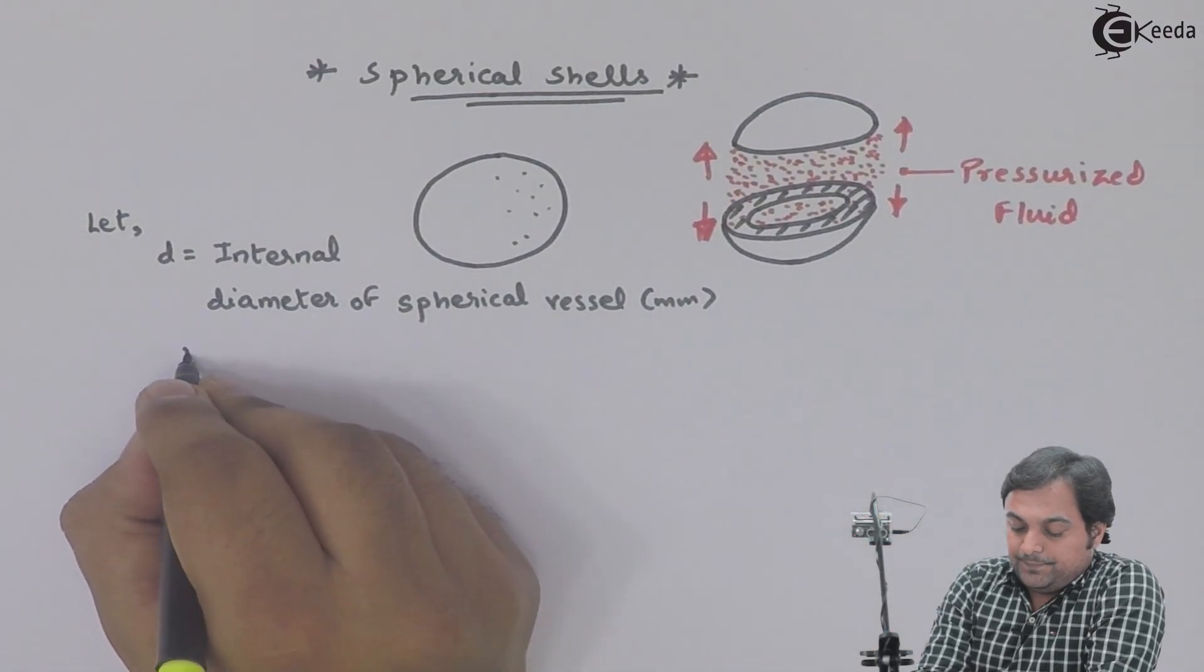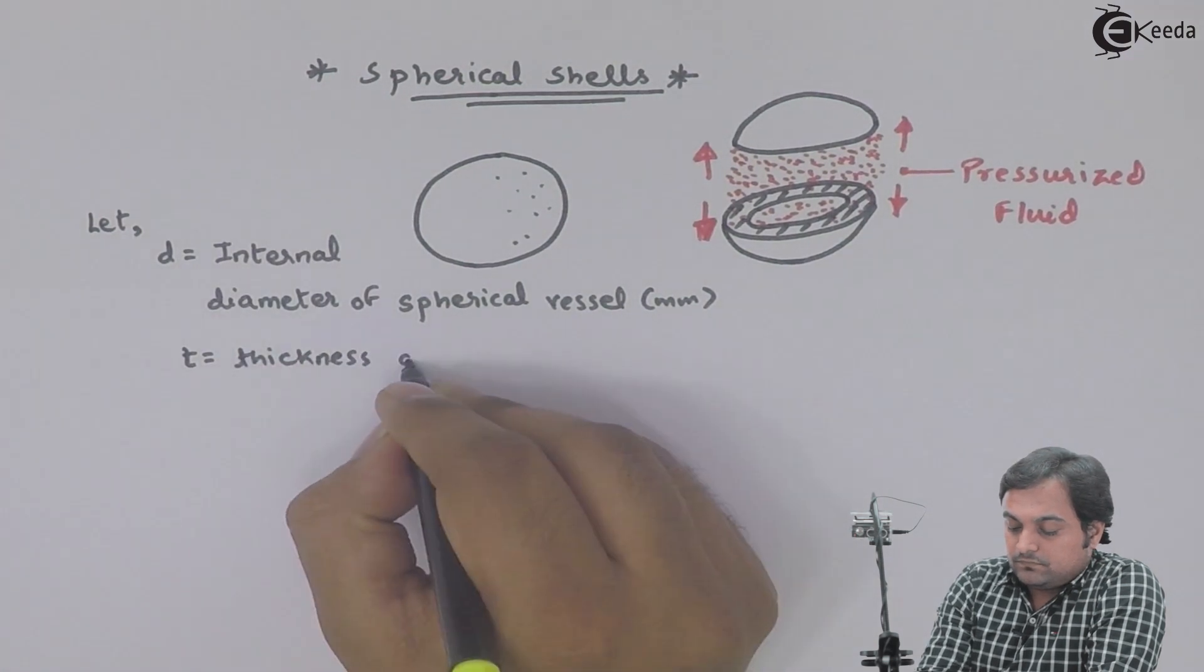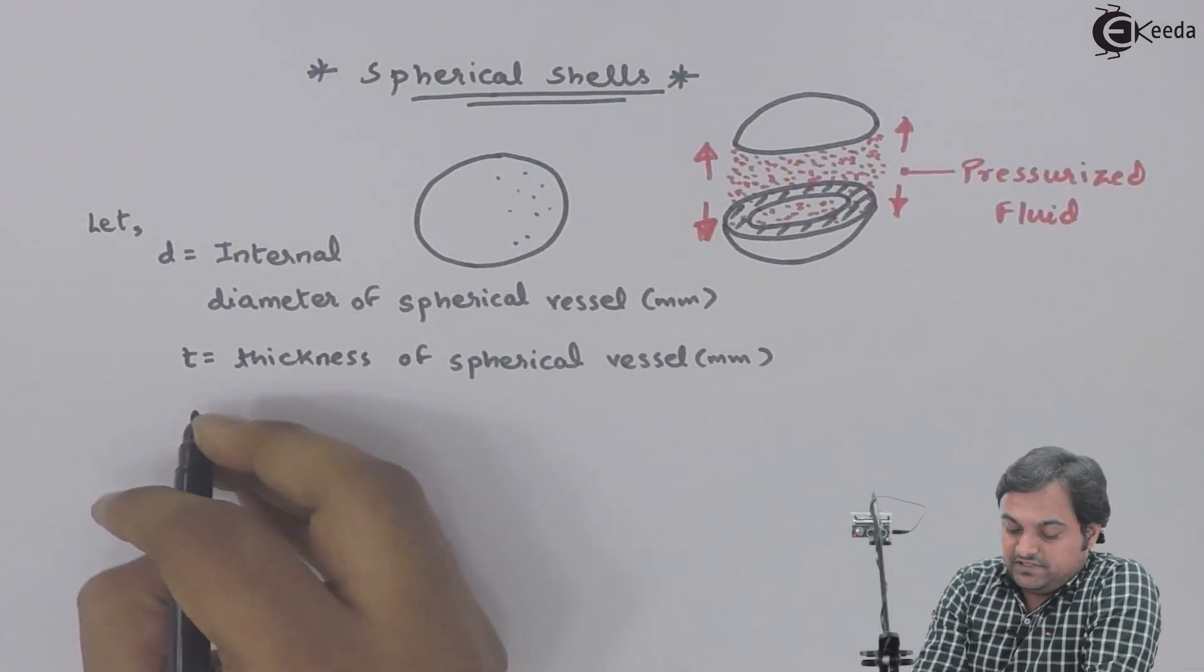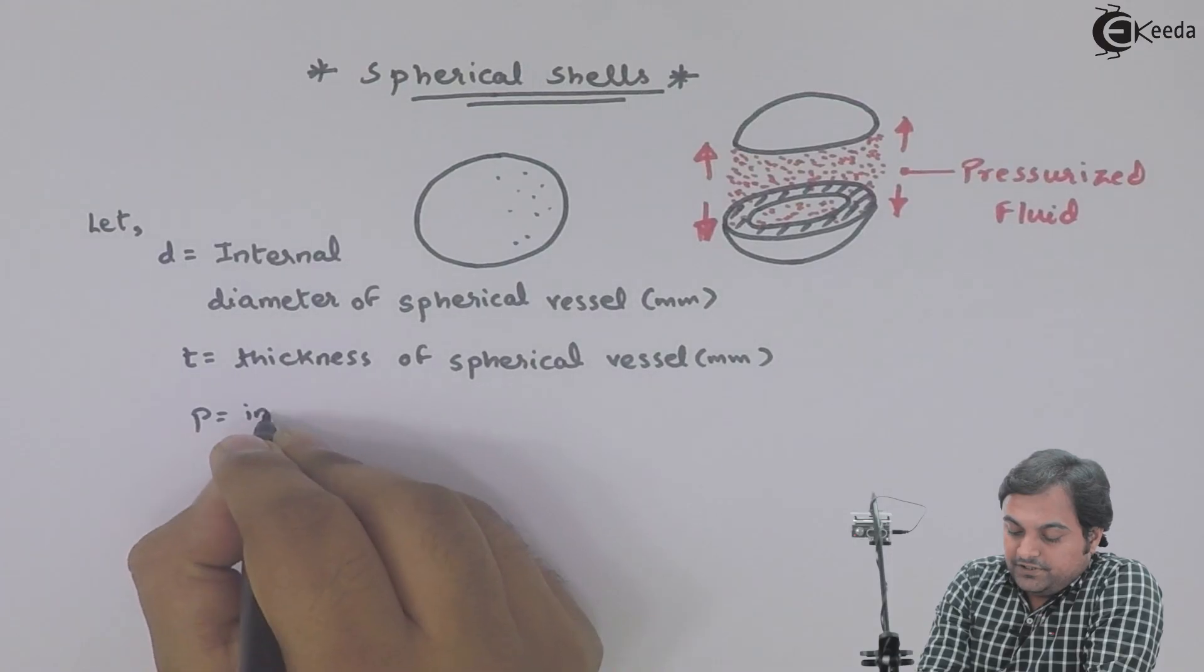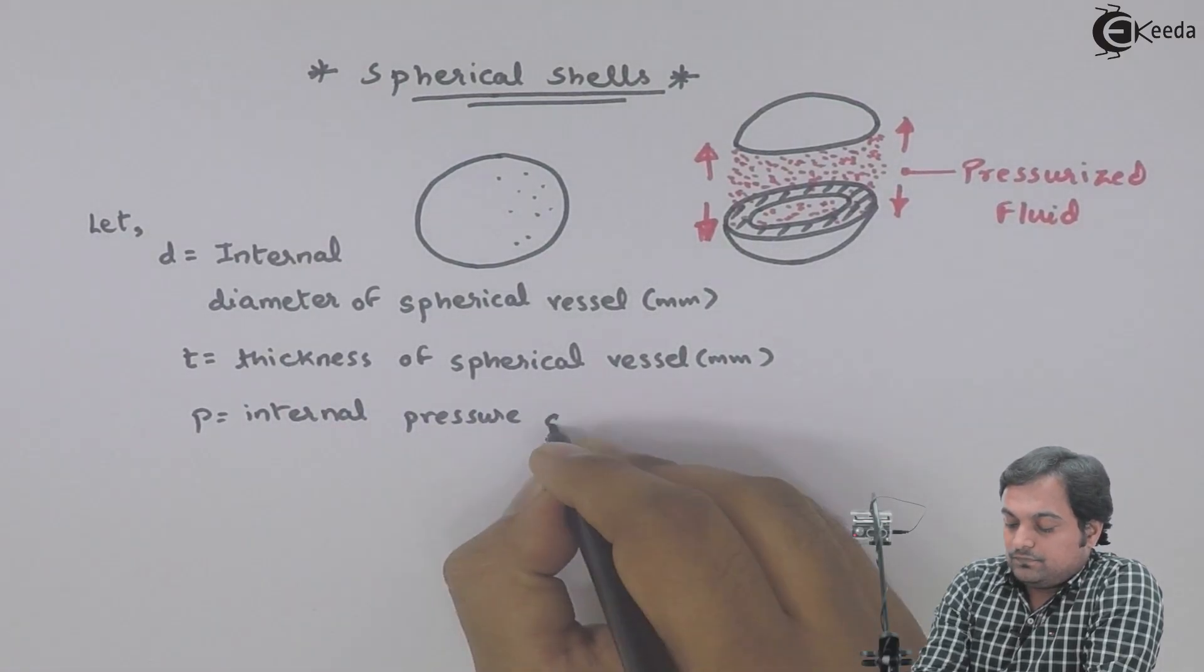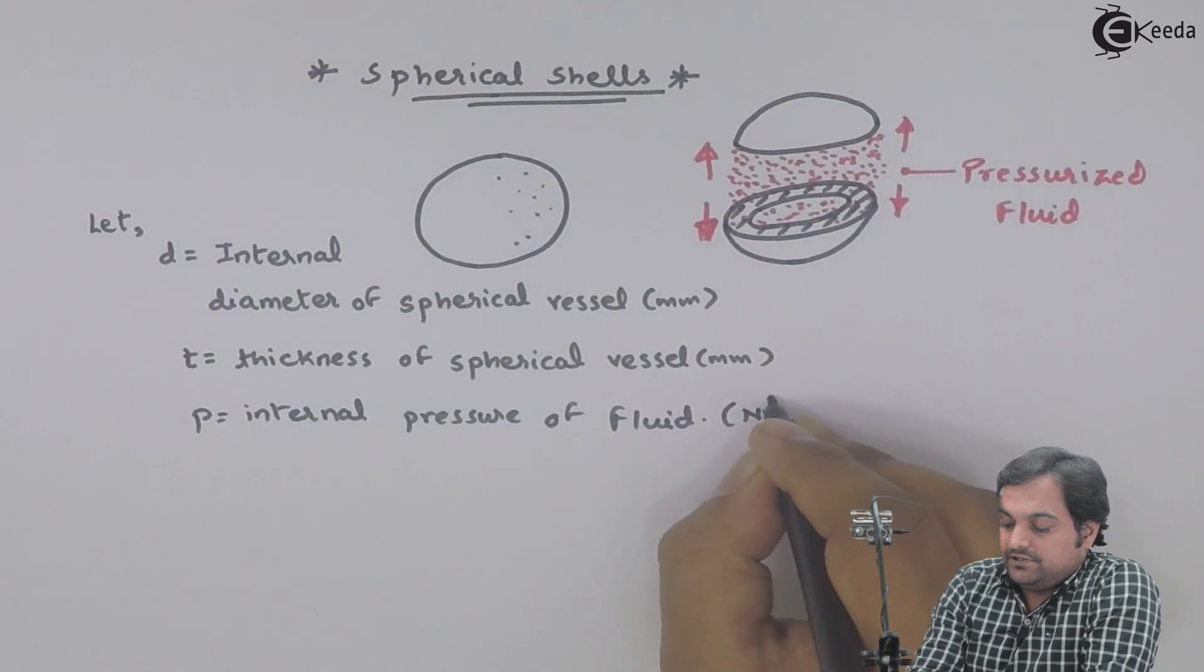Small t will be the thickness of the spherical vessel. I will say that small p be the internal pressure of fluid, that will be in terms of Newton per mm square.